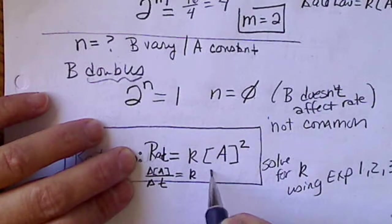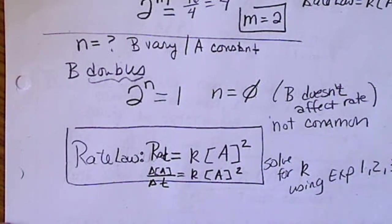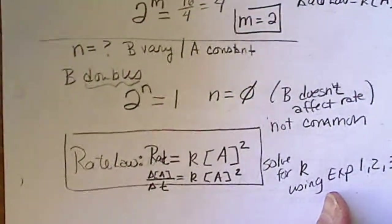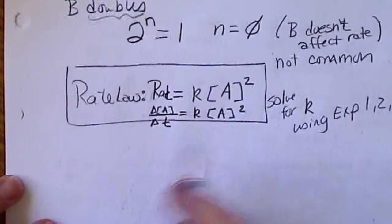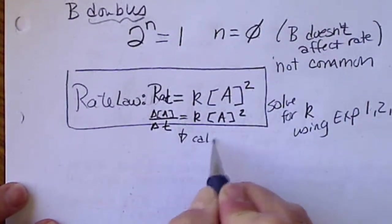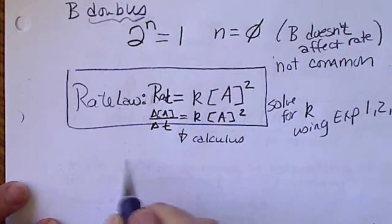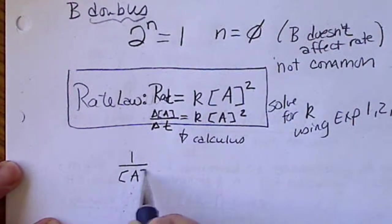This equals K times the concentration of A squared. Your book does the calculus derivation, which I'm not going to do here.